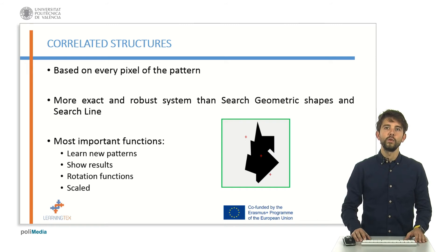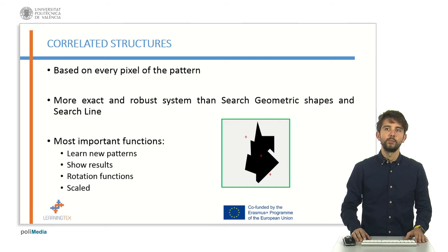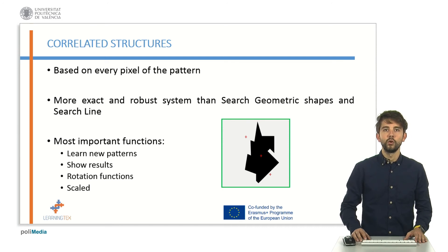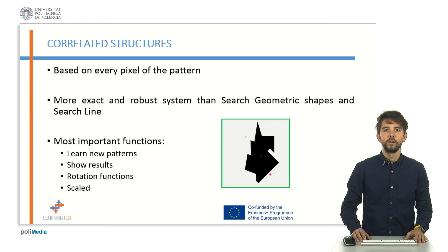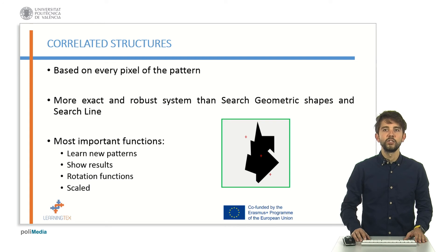In each processing software there are different functions. These functions have different names but are used for similar purposes. There are functions to learn a new pattern, to show the final result, and to modify the orientation and size of the template. The results are the same as geometric structure algorithms, but with better accuracy.